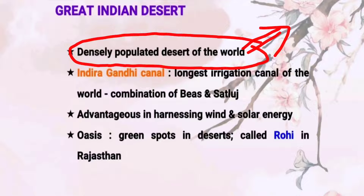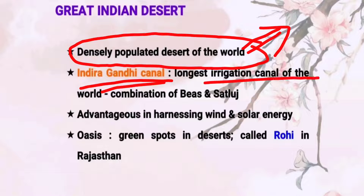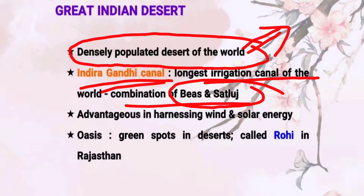The areas like Pushkar celebrate the fair and festival of camels every year. The most important temple in Pushkar is the Brahma temple, also known as the Prajapati Brahma temple. The Indira Gandhi Canal is the longest irrigation canal in the world, and this canal is a combination of the Beas and Sutlej rivers.